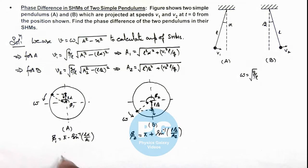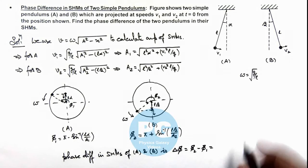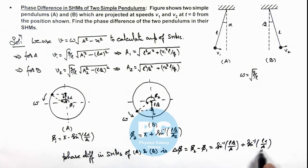So in this situation we can find out the phase difference in SHMs of pendulums A and B. This Δφ is given as φ₂ - φ₁. On substituting the values, π gets cancelled out, and the phase difference is Δφ = sin⁻¹(l·β/A₂) + sin⁻¹(l·α/A₁), where the values of these amplitudes A₁ and A₂ are given by the two results we derived, so that will be the final result of this problem.